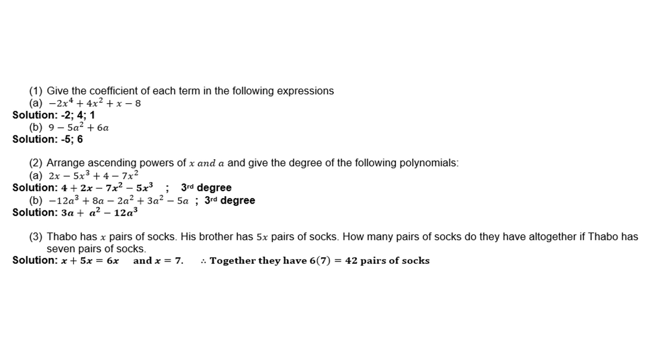Number B: -12a³ + 8a - 2a² + 3a² - 5a. And if you rearrange it, you'll notice there's also like terms which you must first collect. Don't forget, first collect your like terms, and then you write it in ascending order.